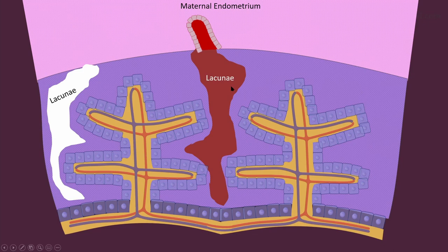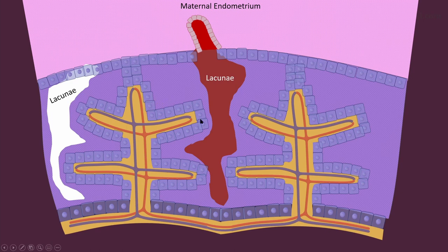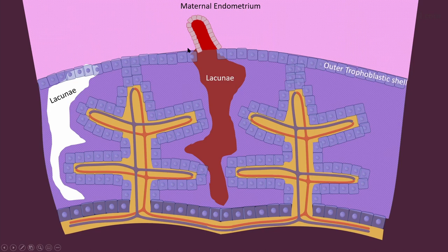Now the lacunae are filled with blood — maternal blood, not fetal blood. Then the cytotrophoblasts that were surrounding these tertiary villi proliferated, went upward, and then fanned out like this, forming a membrane at the fetomaternal interface. This is the fetal part of the placenta; this is the maternal part of the placenta.